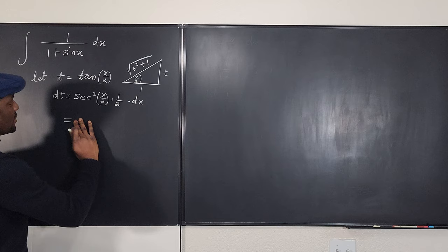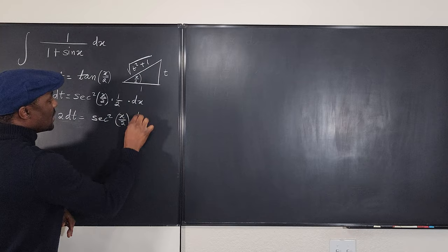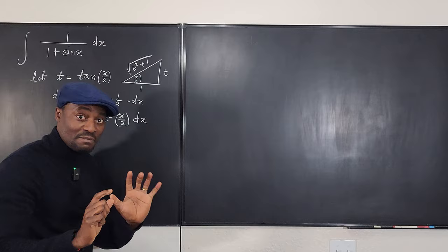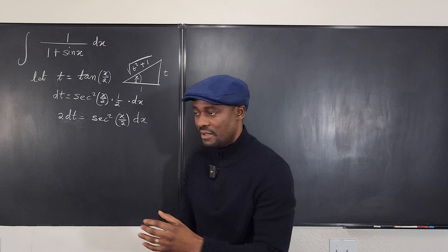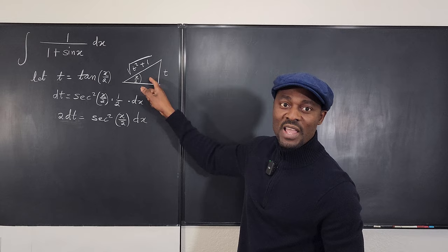Multiplying both sides by 2, we get 2 dt equals secant squared of x over 2 times dx. All I'm trying to isolate is dx, but I need to write secant squared of x over 2 in terms of t. There's a way — just run to the triangle.